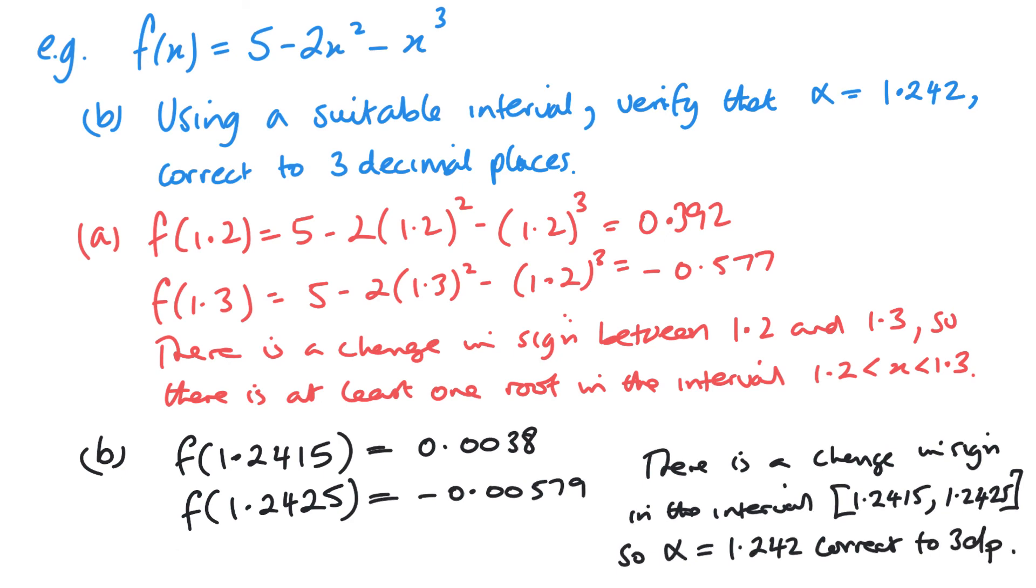Now, a few of you are probably wondering, how does this prove that this answer is correct to three decimal places? Well, quite simply, we've gone to the fourth decimal place of the value that will round up to it, and the value that will round down to it. And if there's a change in sign between those two, then a root has to appear between them. And any value between them will round off to 1.242 to three decimal places. Hopefully that makes sense.